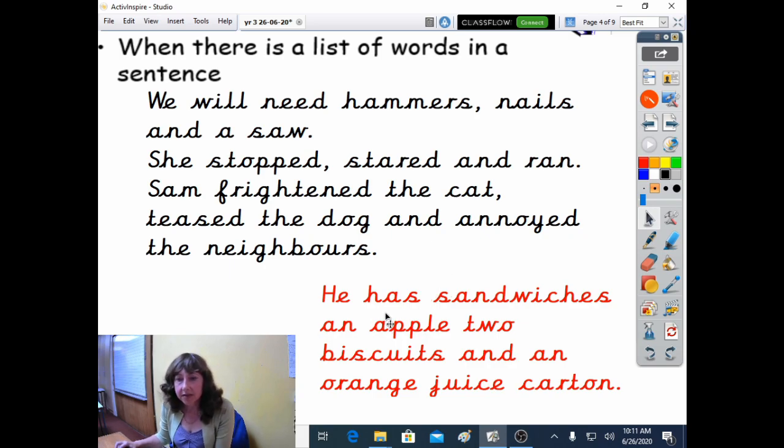So here we have a sentence where we've got a list, and at the moment there's a missing comma. So let's have a look. He has sandwiches, an apple, two biscuits, and an orange juice carton. So sounds like he's got his packed lunch with him.